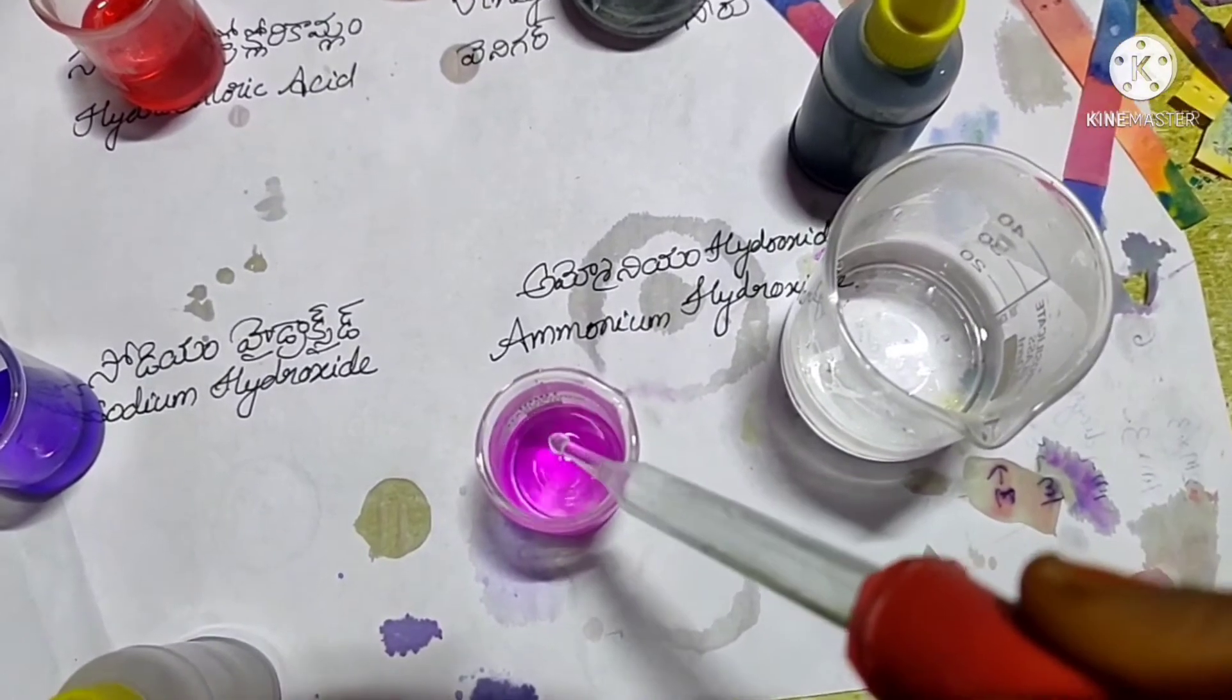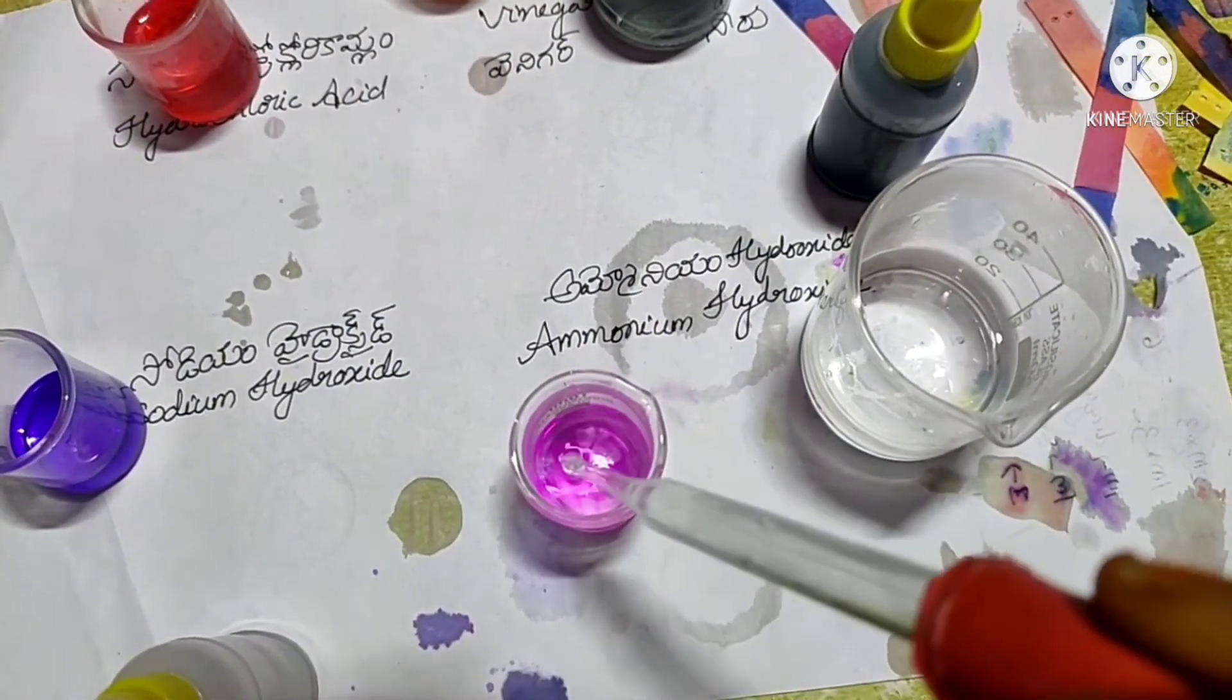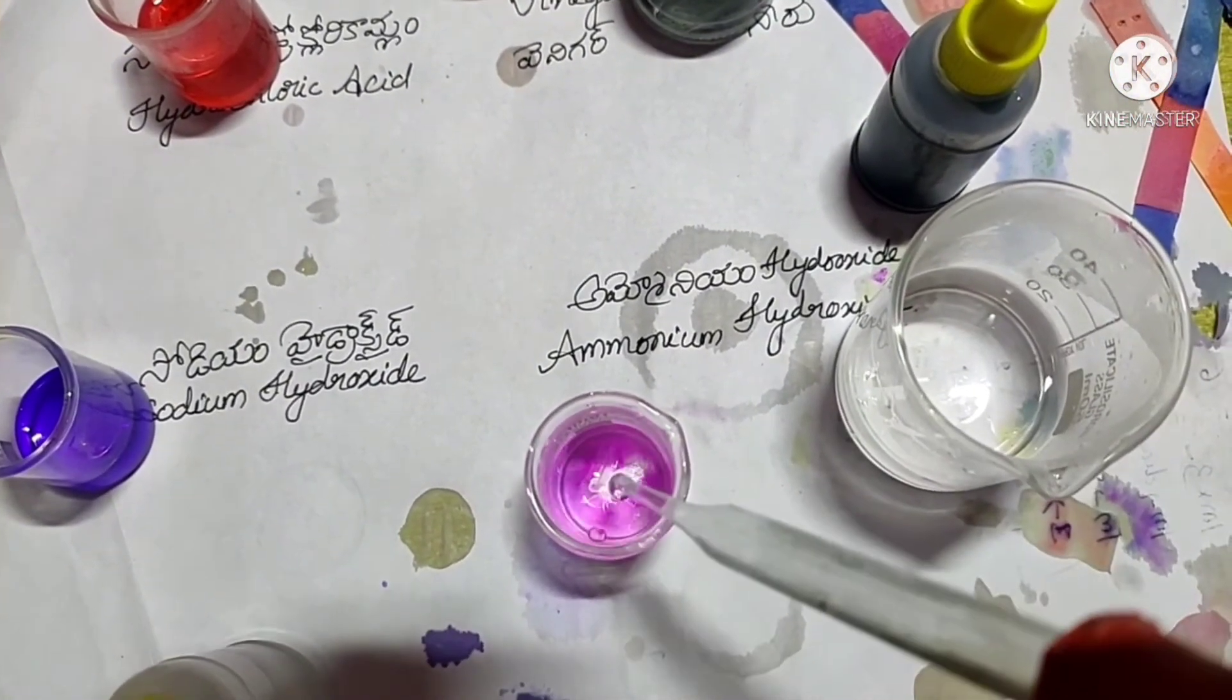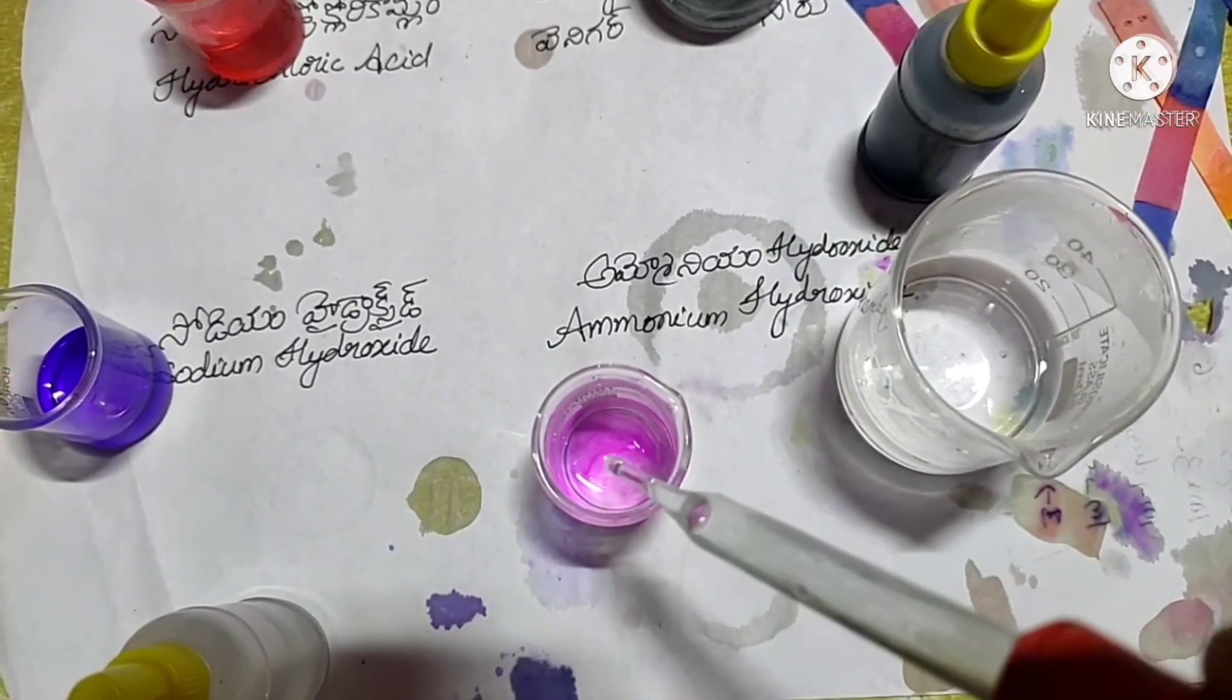When the pink color disappeared, it indicates neutralization by the acid. We know that the color of the phenolphthalein indicator is pink in bases and colorless in acid solutions and neutral substances.